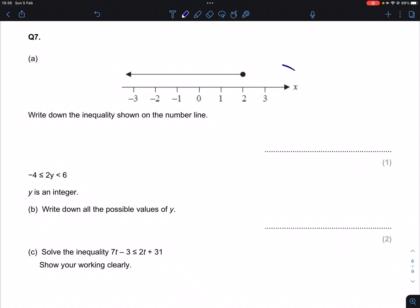Question 7 part a. We have a number line with a solid circle at the number 2 and an arrow pointing to the left. We're being asked to write down the inequality shown in that number line. A solid circle implies that we include this number 2 and everything to the left of it.